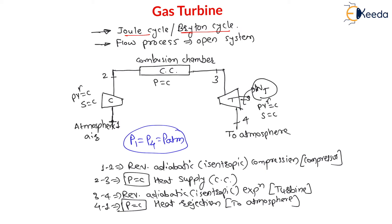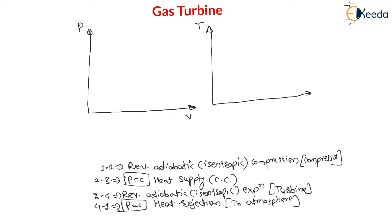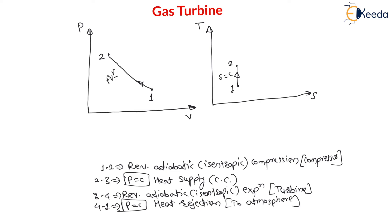Now let us draw this Brayton cycle on a pressure-versus-volume (PV) diagram as well as a temperature-versus-entropy (TS) diagram. Process 1 to 2 is isentropic compression: on the TS diagram, entropy remains constant and temperature increases. On the PV diagram, pressure increases following pv raised to gamma equals constant.